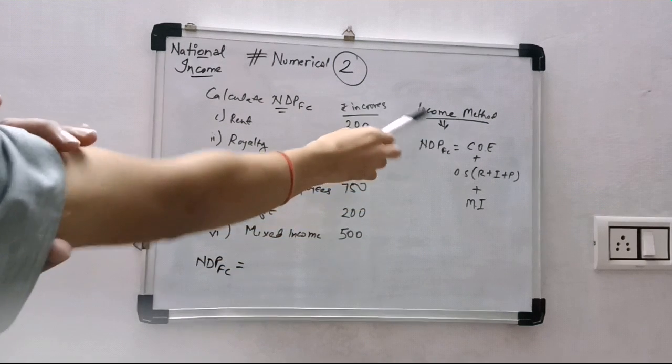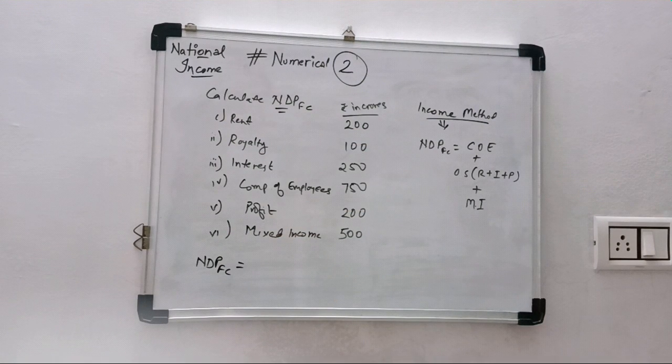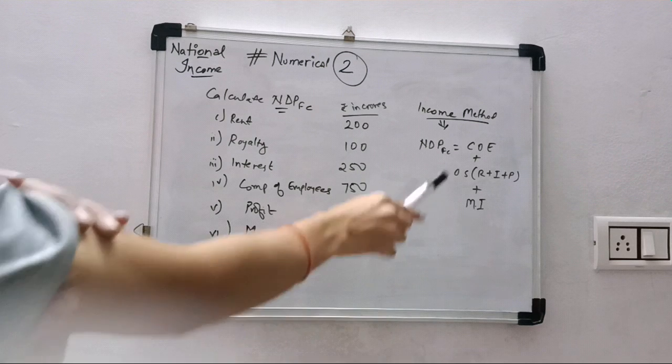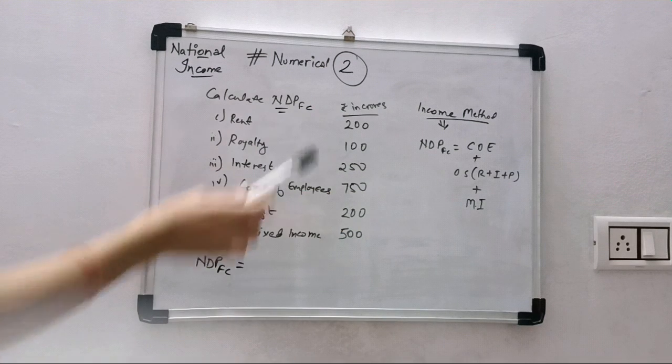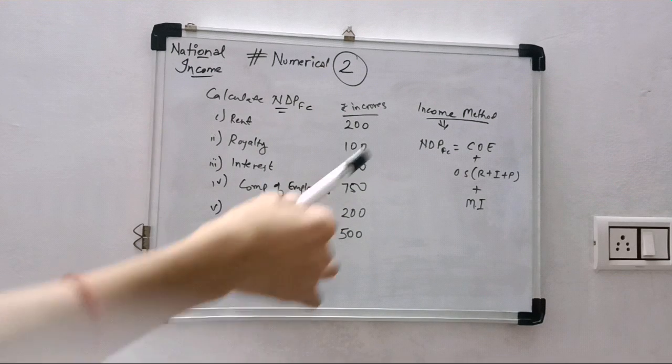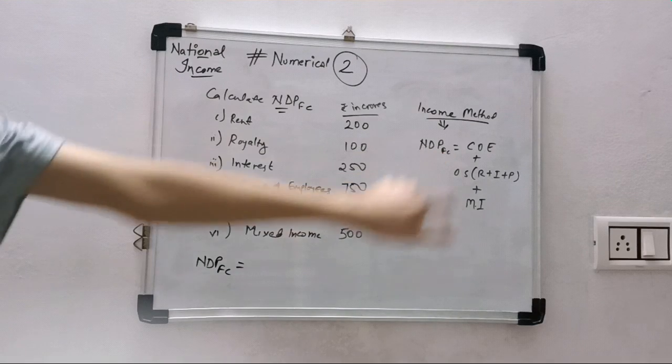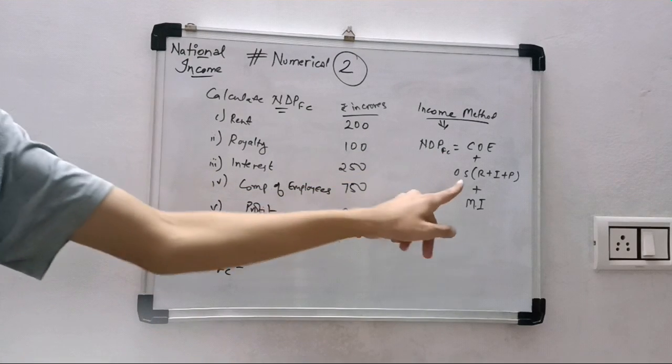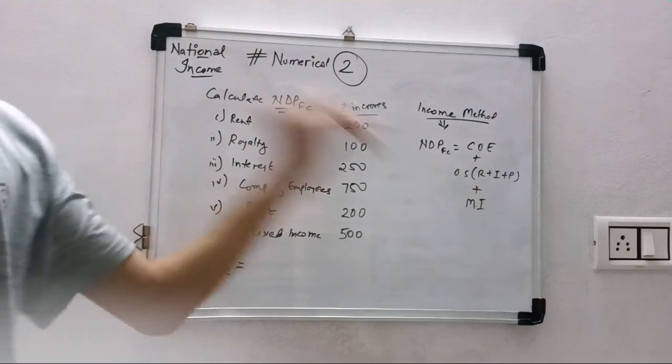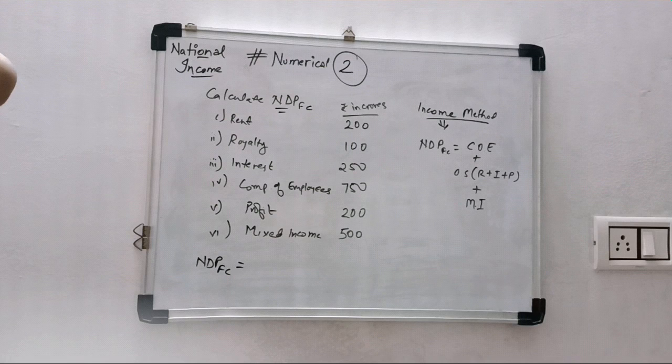By using income method we will get NDPFC, and we have to find NDPFC. NDPFC equals compensation of employees plus operating surplus, that is RIP: rent and royalty, interest, plus profit, plus mixed income.